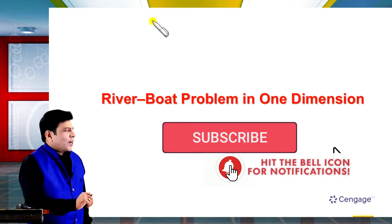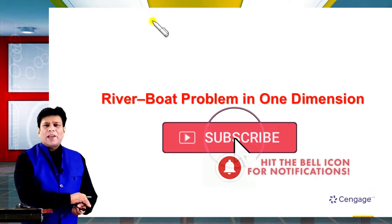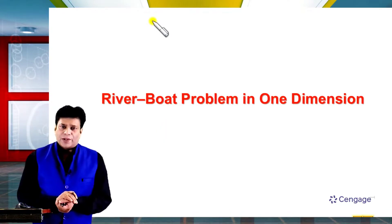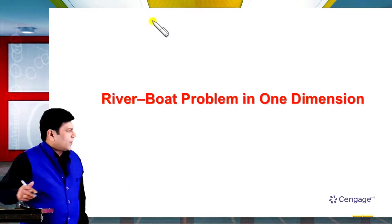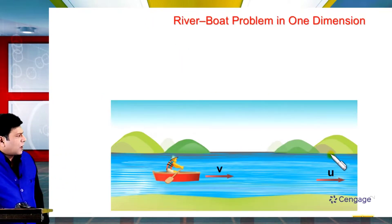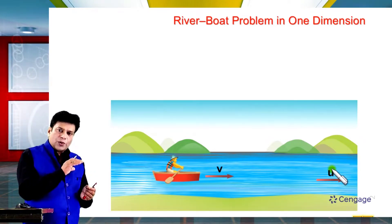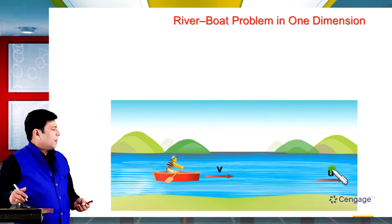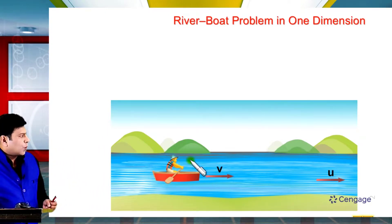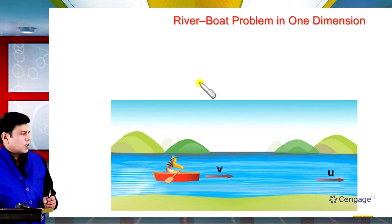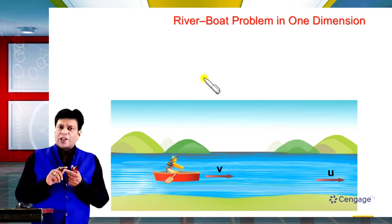Dear friends, in this section we are going to discuss the application of relative motion in the river-boat problem in one dimension. Let us consider one situation. The velocity of the river water current is U — that is, the velocity of the water flowing is U, with respect to ground. The velocity of the boat with respect to water, let us consider this value as V. Let us consider the first case.